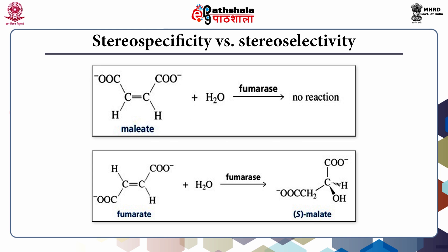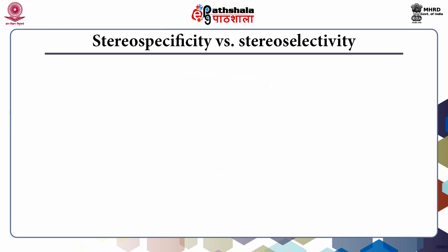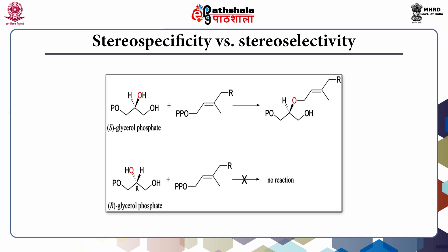Let us look at examples to understand stereospecificity in detail. Maleic acid is the cis isomer of butenedioic acid, whereas fumaric acid is the trans isomer of the same. Malate and fumarate are ionized forms of these acids. In the reaction shown, we see the addition of a water molecule to malate and fumarate catalyzed by the enzyme fumarase. Fumarase is stereospecific and is able to catalyze only the addition of water to fumarate, which is the trans isomer, but not to malate, which is the cis isomer. In another example, enzymes that catalyze the alkylation of S-glycerol phosphate will not be able to alkylate the R-glycerol phosphate.